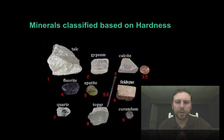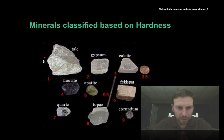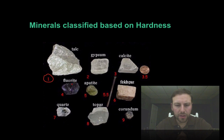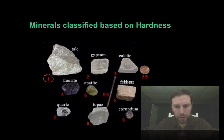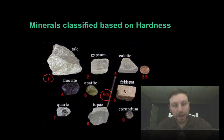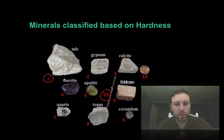Here are minerals classified based on their hardness. When we do the Mohs hardness scale, something like talc with a hardness of 1 can be scratched by any of the other minerals, or for instance an iron nail or a copper penny can scratch something with a hardness of 1. The iron nail has a hardness of 5.5, so if we try to scratch feldspar with it, it's not going to work — but if we take the feldspar and try to scratch the iron nail, it will scratch the iron nail.